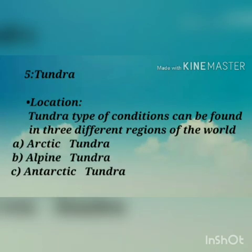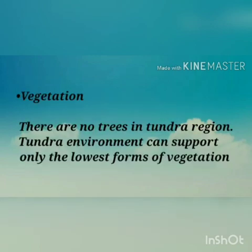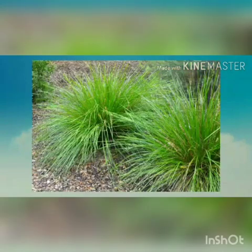The fifth region is the tundra region. Tundra type conditions can be found in three different regions: Arctic tundra, Alpine tundra, and Antarctic tundra. Climate: tundra regions are the extreme cold and dry climatic regions of the world, remaining cold around the year with no summer season. Rainfall: rainfall is very low, ranging from 100 mm to 250 mm annually. Vegetation: there are no trees in the tundra region; the environment supports only the lowest forms of vegetation such as mosses, lichens and some kinds of grasses.